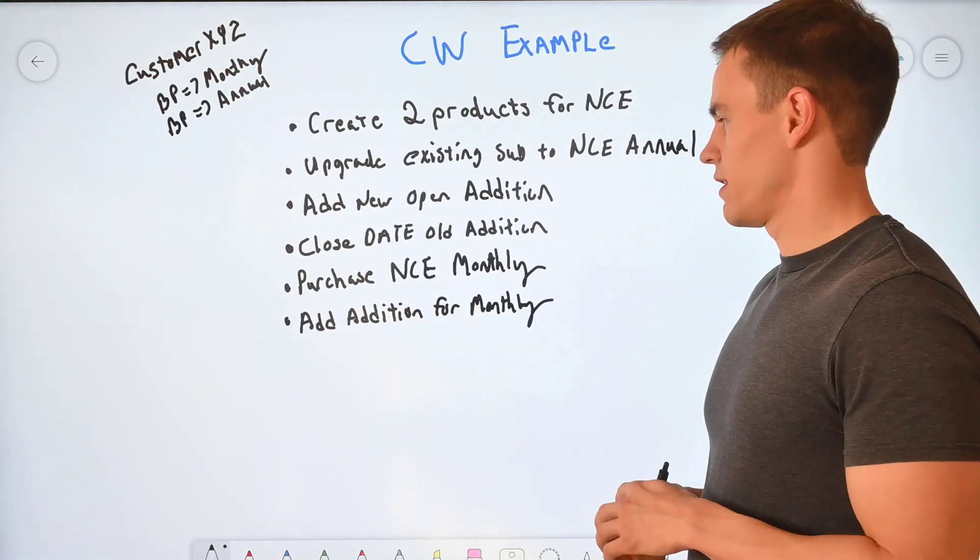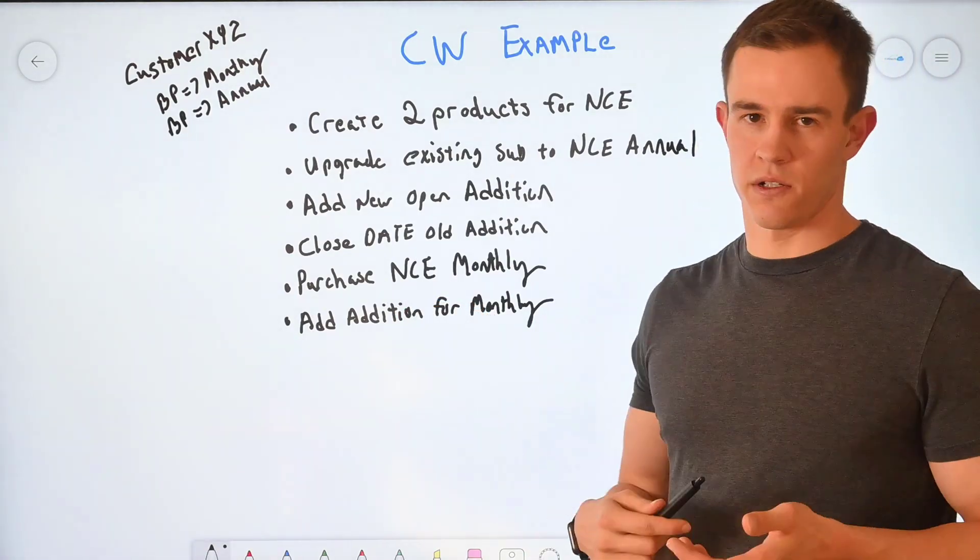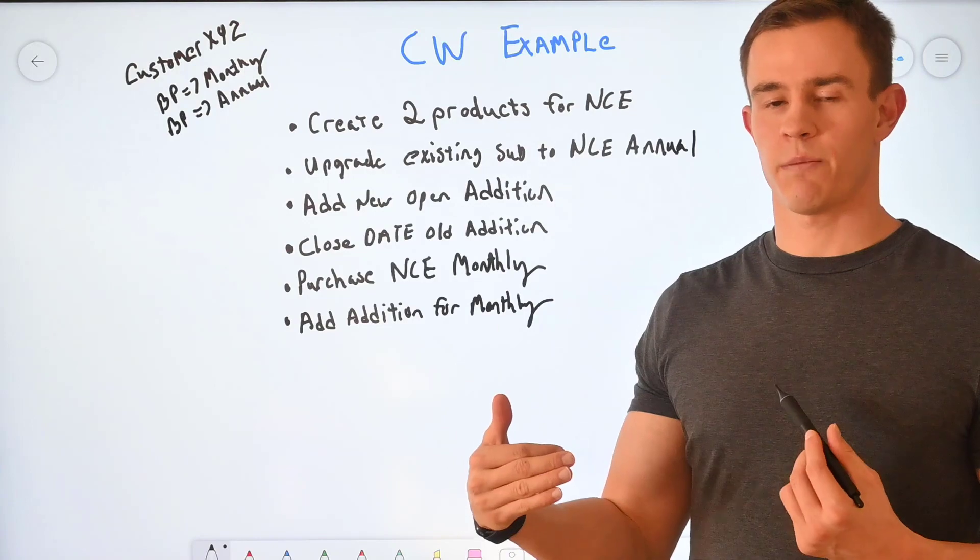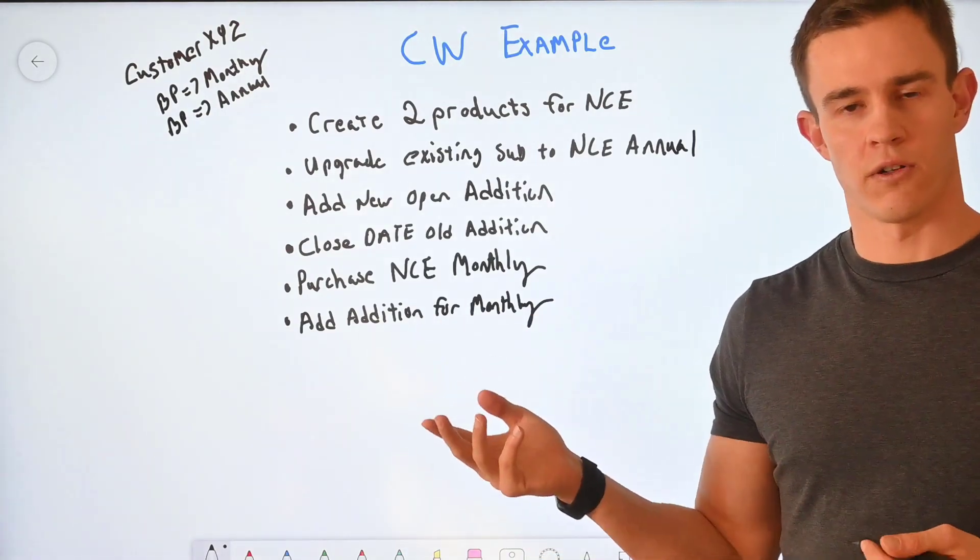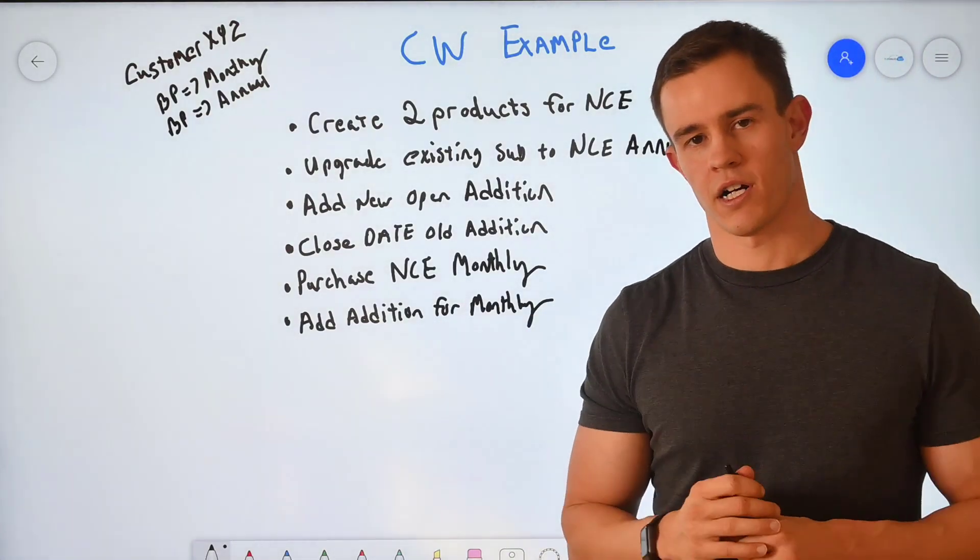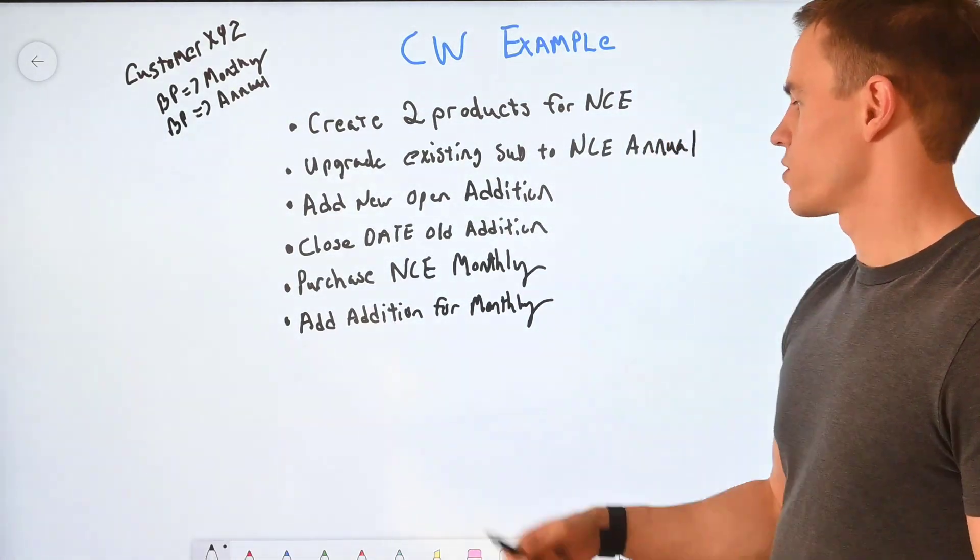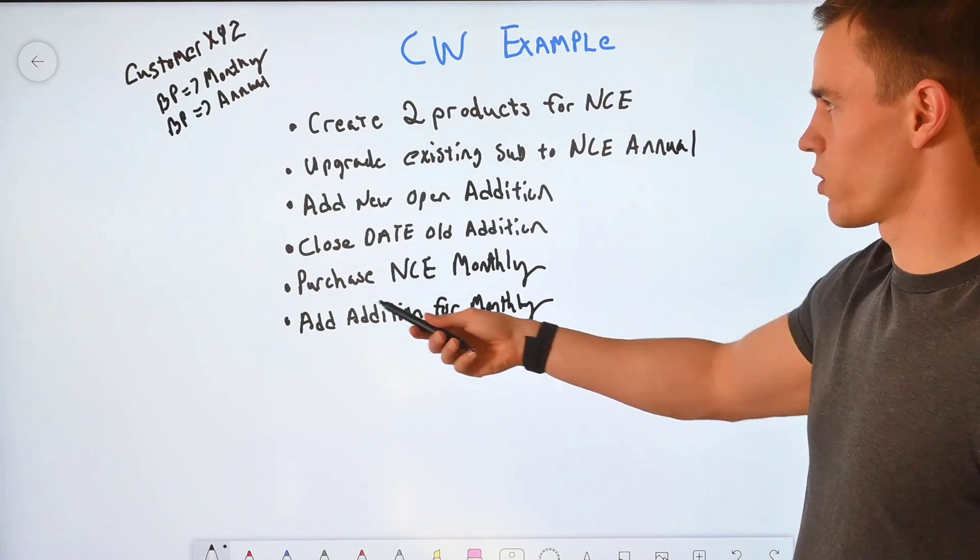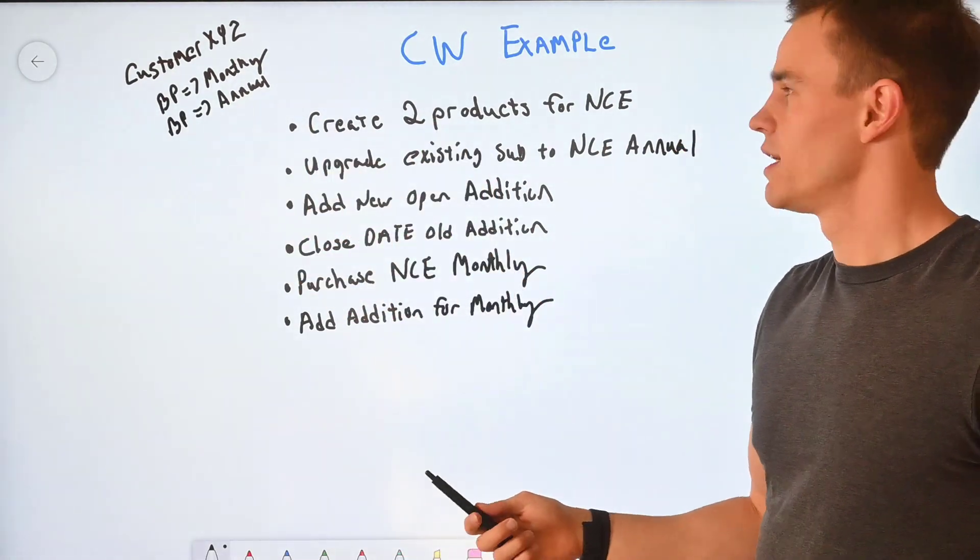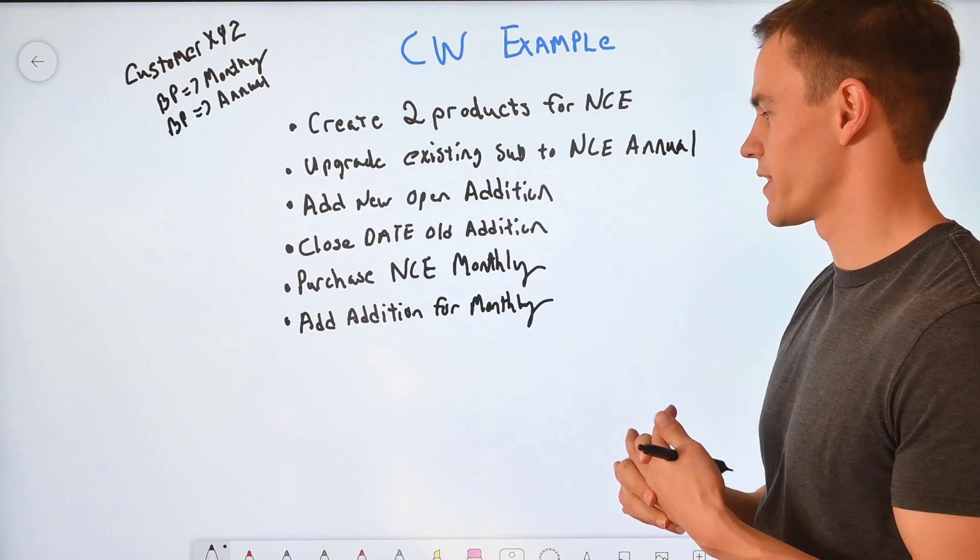The other piece here, you need to go in and purchase the new NCE monthly to get the separate subscription going for that and then add that as another open edition on your contract as well or your agreement in PSA. So essentially here, this is just a high level workflow of converting and then moving that into PSA as far as a high level example.